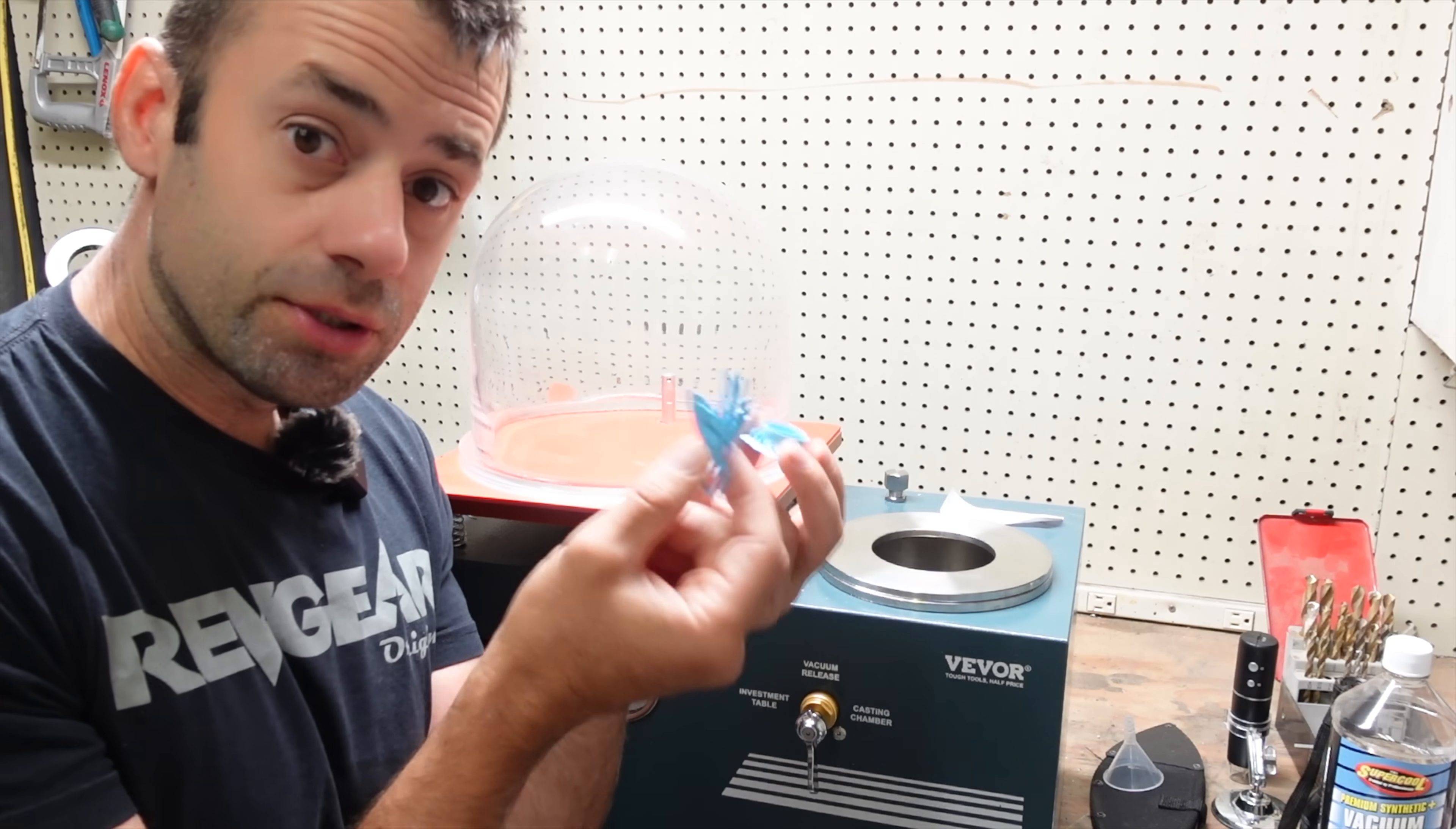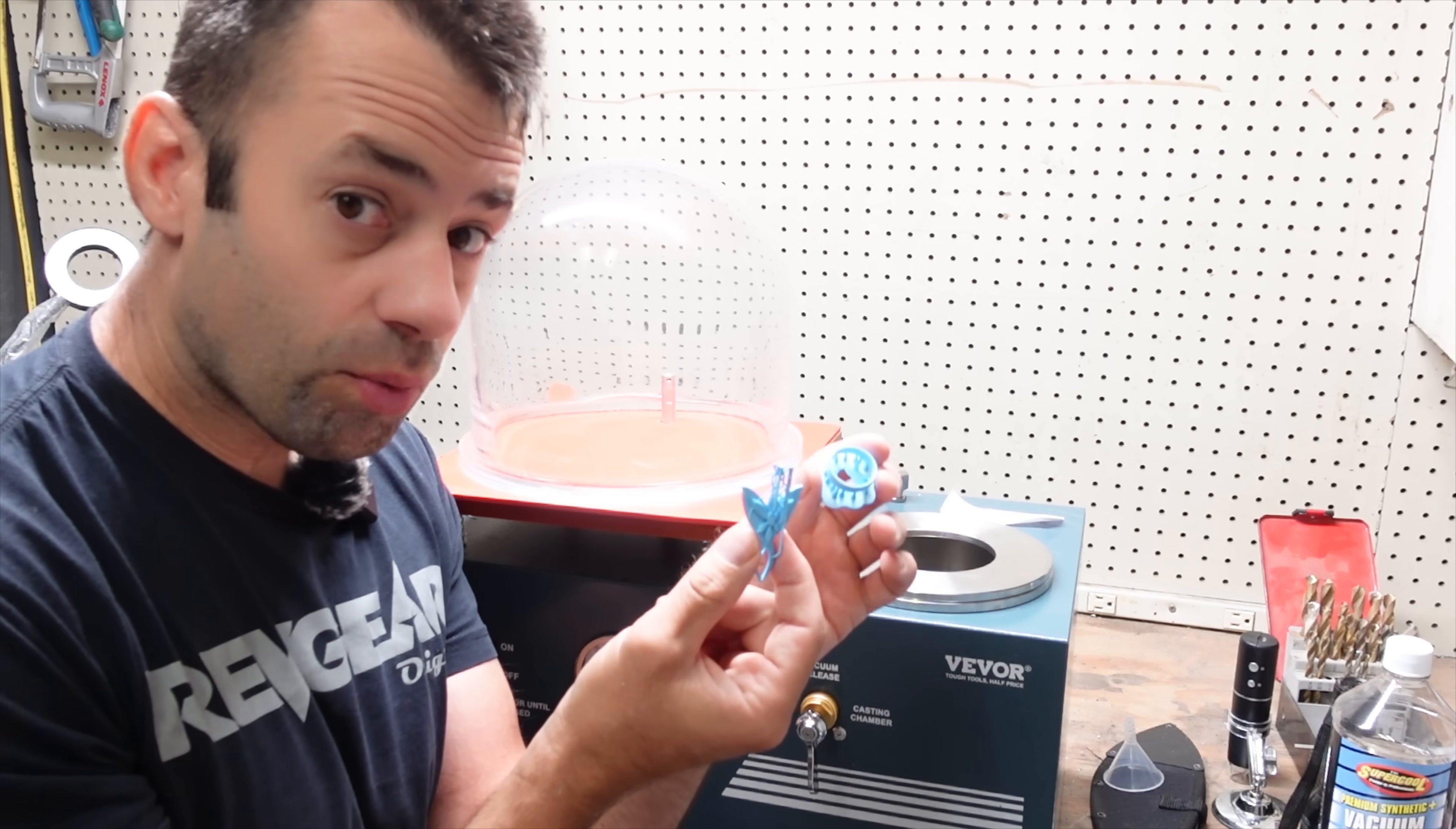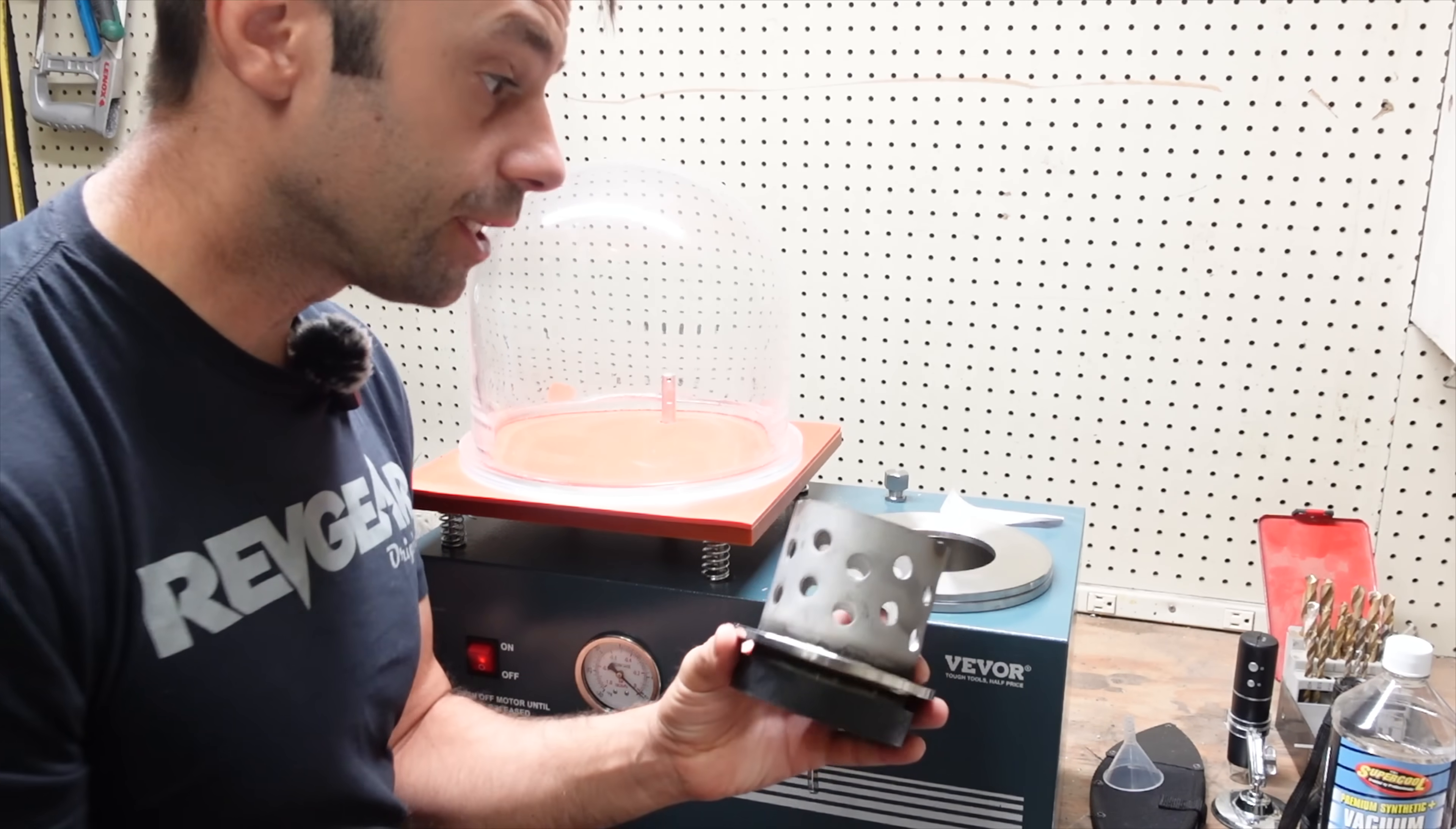But I think we're ready to test it. So to test it I printed out some 3D printed jewelry and this is printed out of castable resin. So this will burn away just like wax but it'll be a good way for me to be able to test the machine. This flask is pretty small but for jewelry it's sufficient. So let's get to work.